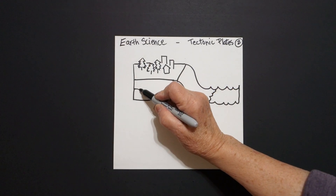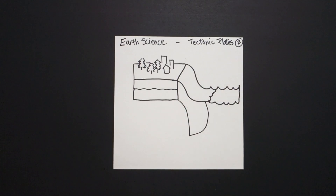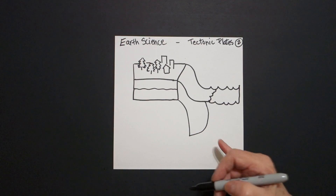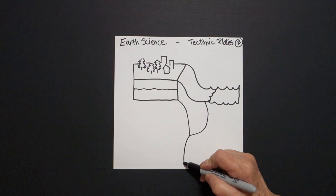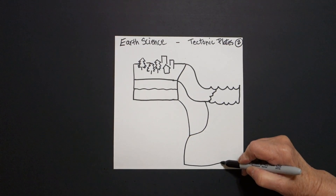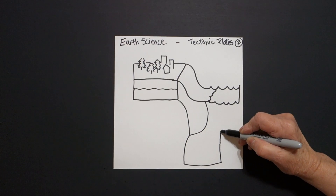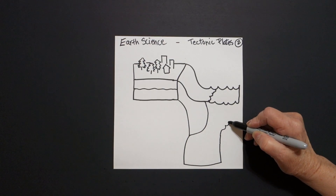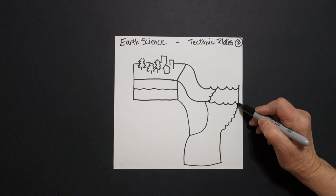Right here, we can just put another slightly wavy line and connect. Now we come back over here to the bottom and draw a curve line down, slightly curve line over, curve line up, and now just curve line, curve line, curve line, curve line — connect.